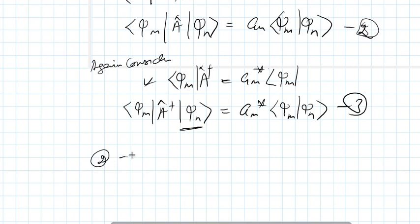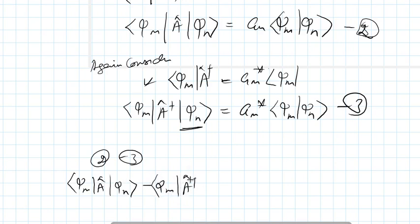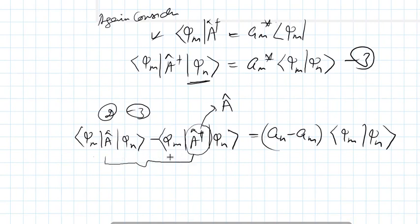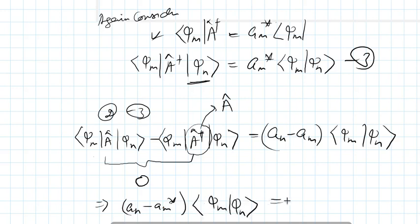Now, equation two minus equation three gives us: phi_m A phi_n minus phi_m A-dagger phi_n equals (a_n minus a_m*) times phi_m phi_n. Since A is a Hermitian matrix, A-dagger equals A, so both terms become identical and cancel out, giving zero. This implies that (a_n minus a_m*) times the inner product phi_m phi_n equals zero.